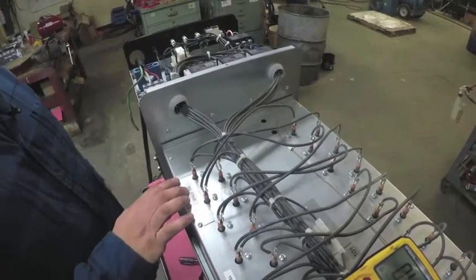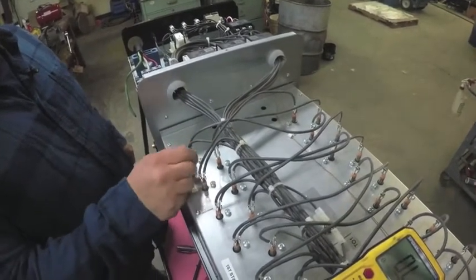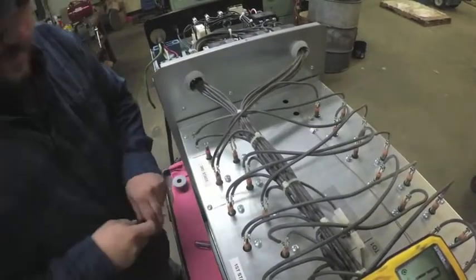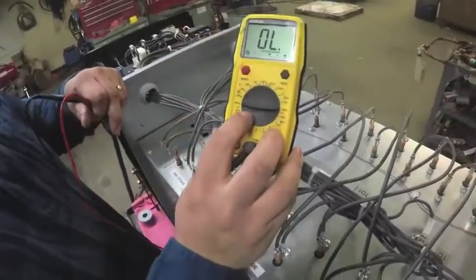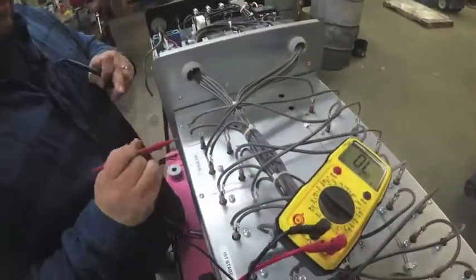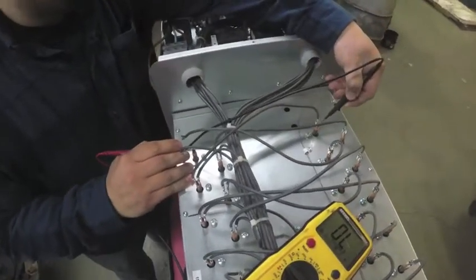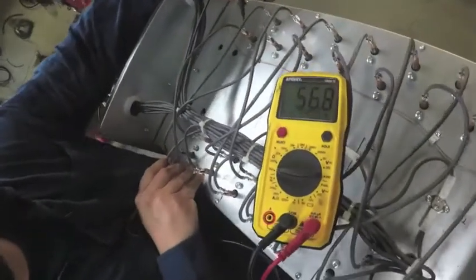Next, we're going to be ohming one of the coils. You need to remove one side of the coil off from the male prongs. Turn your voltmeter to ohms. Take one end on one side, one end on the other. As we can see, we have 56.8 ohms.